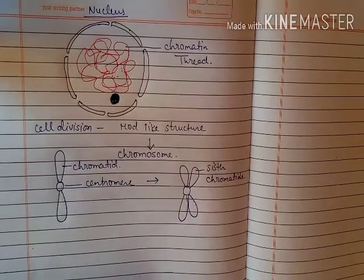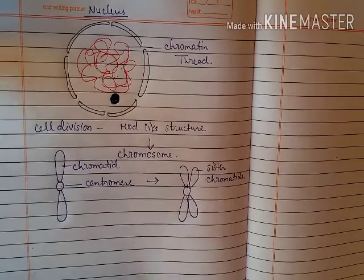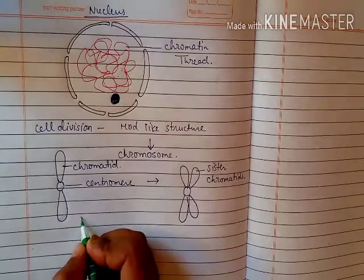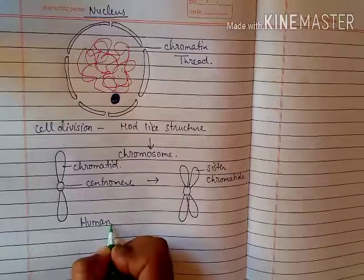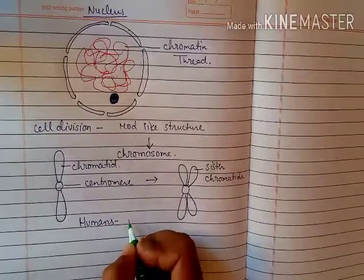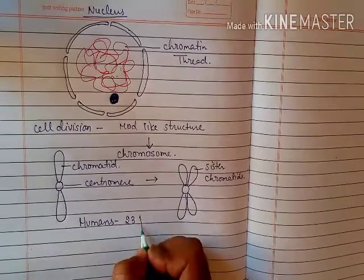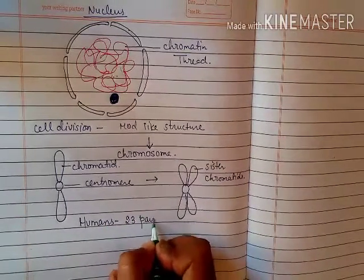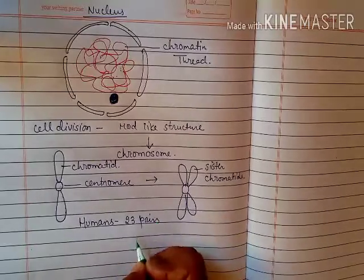Each organism has a fixed number of chromosomes. For example, humans have 23 pairs of chromosomes.